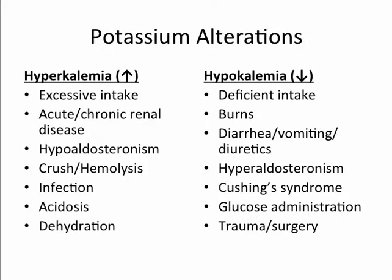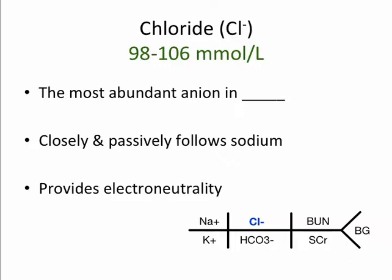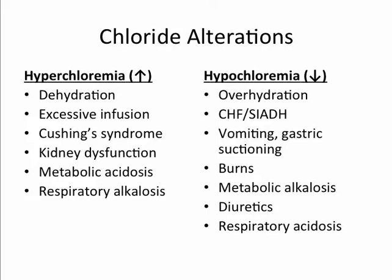Chloride is the most abundant anion in the extracellular fluid, closely and passively following sodium. Chloride primarily functions to provide electroneutrality. Chloride can be elevated in dehydration, excessive infusion, Cushing syndrome, kidney dysfunction, metabolic acidosis, and respiratory alkalosis. Chloride can be decreased in overhydration, CHF or SIADH, vomiting, gastric suctioning, burns, metabolic alkalosis, diuretics, and respiratory acidosis.